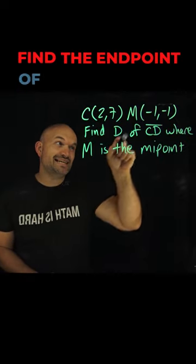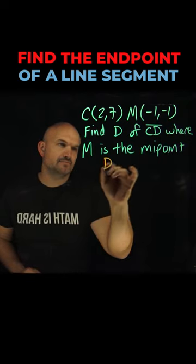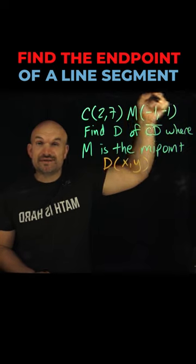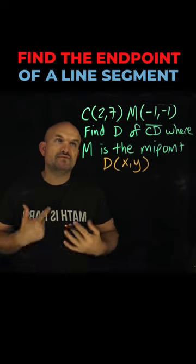In this video it says find D of CD where M is going to be the midpoint, so we don't know what D is. However, we do know that M is going to be the midpoint of those two values, so the important thing we need to understand is just use your midpoint formula.